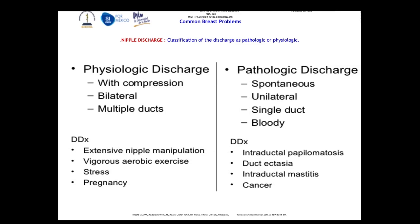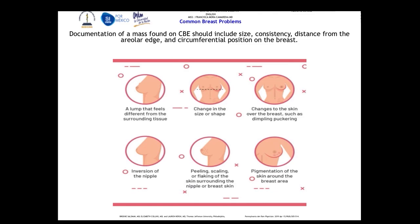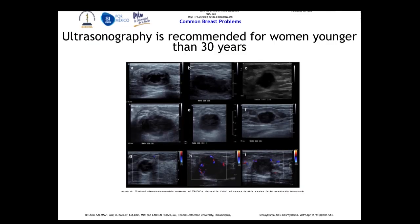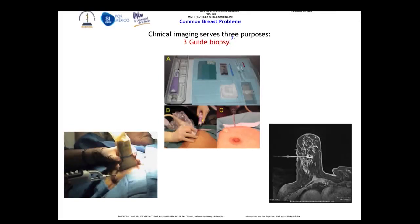Physiologic nipple discharge is most commonly bilateral and comes from multiple ducts, while pathologic discharge is spontaneous, unilateral, from a single duct, or can even be bloody. Benign masses are typically smaller, mobile, smooth, and regular, while malignant masses are larger, fixed, hard, and heterogeneous in texture. We recommend diagnostic mammography for women around 40 years old, ultrasonography for women younger than 30, and MRI can also be used; clinical imaging can also guide biopsy.